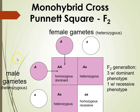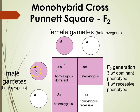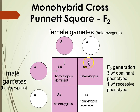Now if we cross two heterozygous individuals — dominant trait/recessive trait crossed with dominant trait/recessive trait — we get a variety of different outcomes in the F2 generation. Here, these are the eggs and these are the sperm. We get: an egg and sperm coming together giving homozygous dominant; egg and sperm giving heterozygous; egg and sperm giving heterozygous; and egg and sperm giving homozygous recessive. So 25% of the time homozygous dominant, 50% of the time heterozygous.